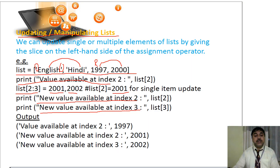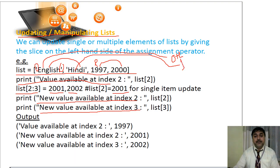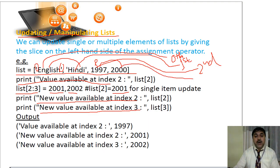Why is this index 2? Because the first element is at the 0th position, the second element is at the 1st position, the third element is at the 2nd position, and the fourth element is at the 3rd position. These are the positional addresses of each of the variables in the list.